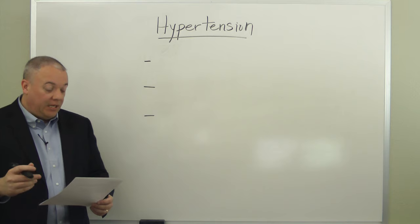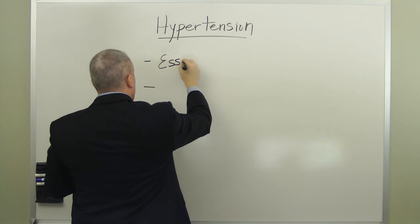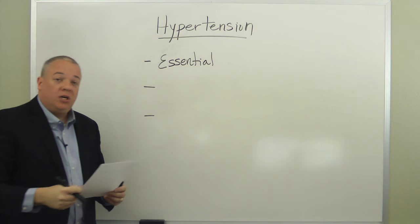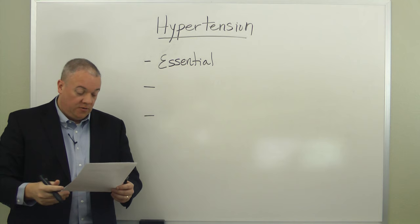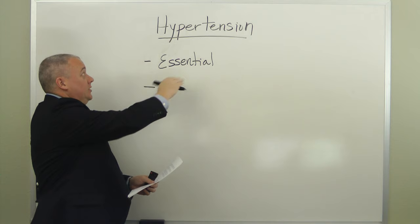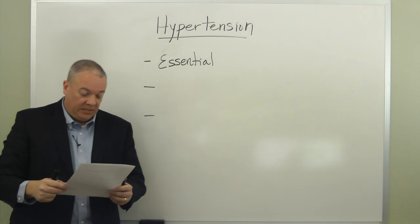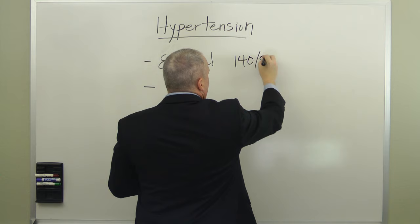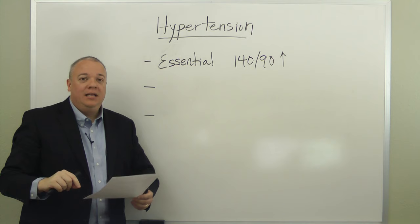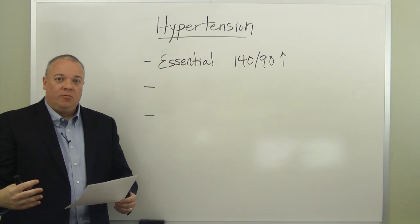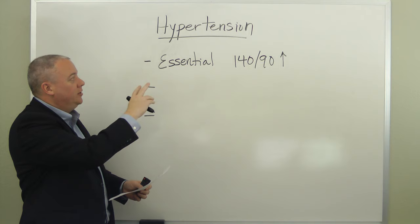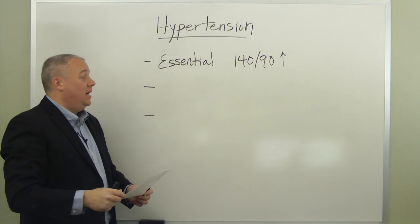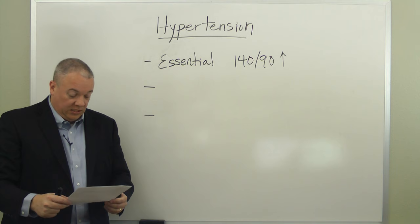There are three different forms of hypertension. Essential hypertension is the most common form, and its cause is unknown. Most patients are unaware they have it. It is usually diagnosed when patients have had three separate blood pressure readings of 140/90 or higher, with no other medical condition or disease explaining those readings.